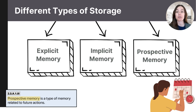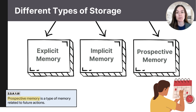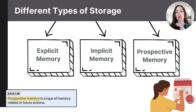The last type of long-term memory is called prospective memory — a type of long-term memory about future events. It refers to the ability to remember and carry out a planned action at the right time. This would be like remembering to feed the cat before leaving the house, remembering to attend a meeting at a certain time, or remembering to send a friend a card on their birthday. These are prospective memories.